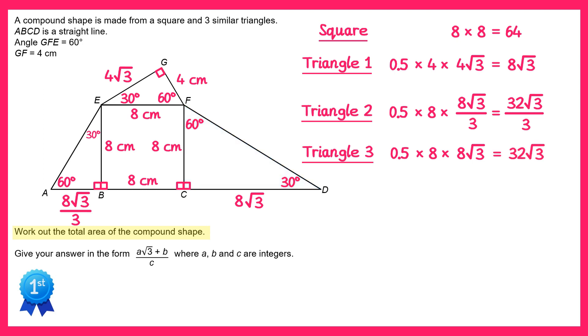So we now have all of the areas, we just need to add all of those up. To add these up we need a common denominator, so we need to get 3 on the bottom of all of these. So 64 could be turned into 192 over 3, 8 root 3 would be 24 root 3 over 3, and 32 root 3 would be 96 root 3 over 3. And if you add all of these together, you end up with 152 root 3 plus 192 over 3, which matches the form we were asked for in the question.